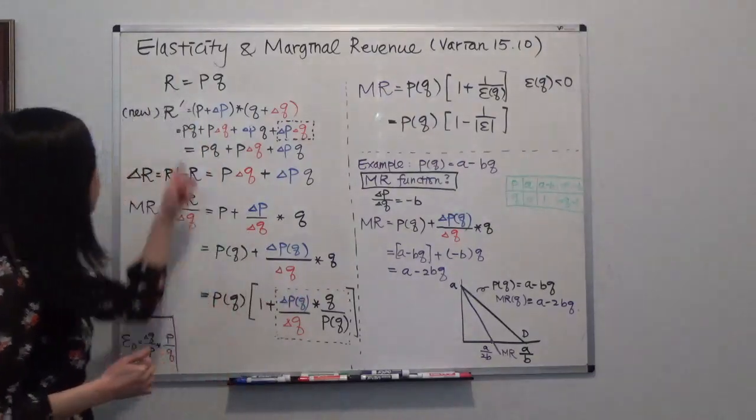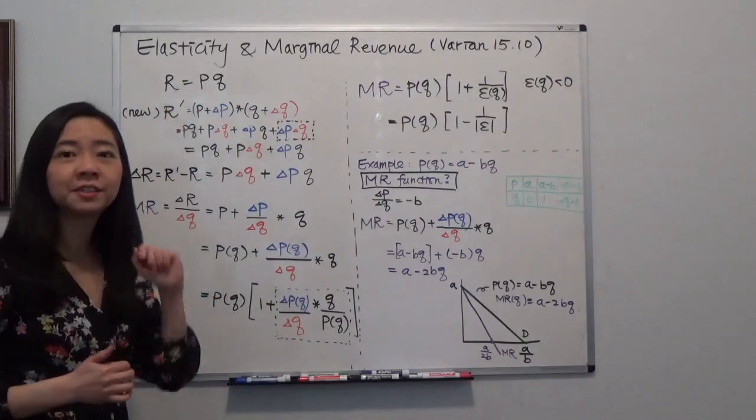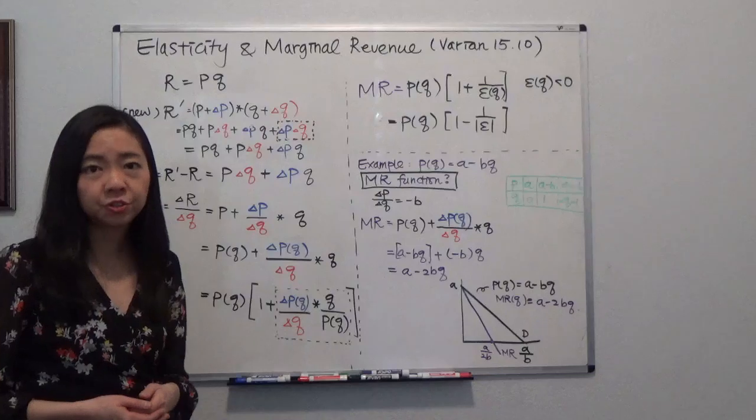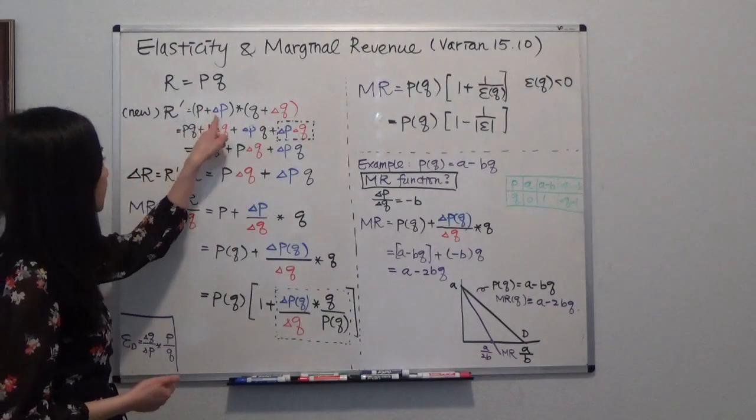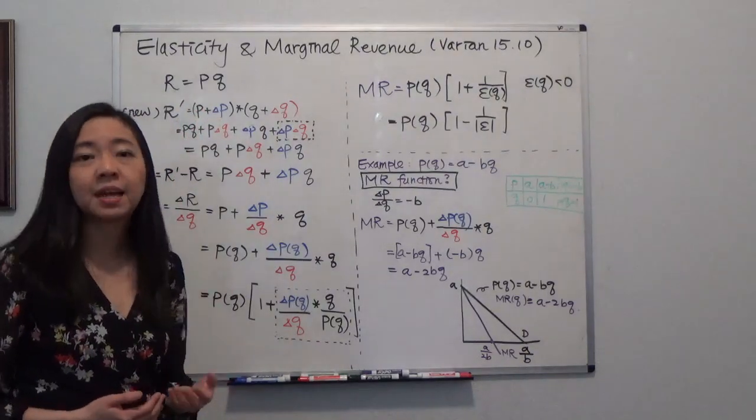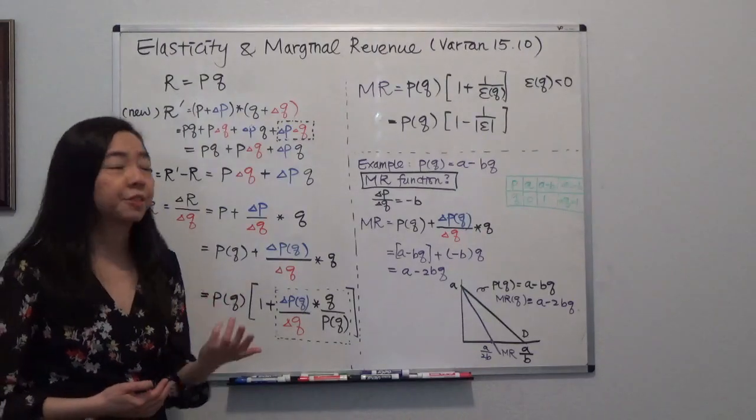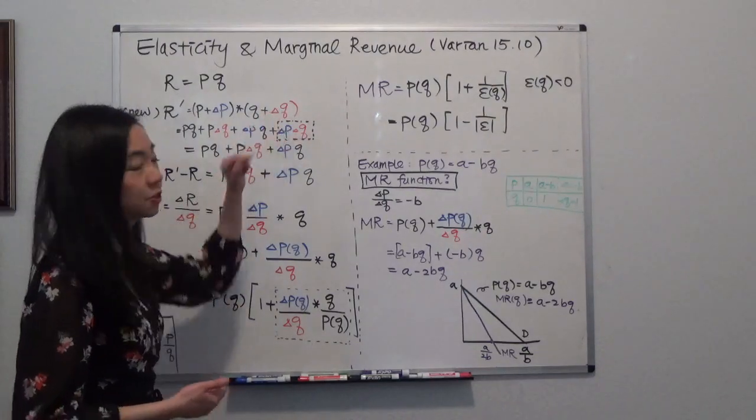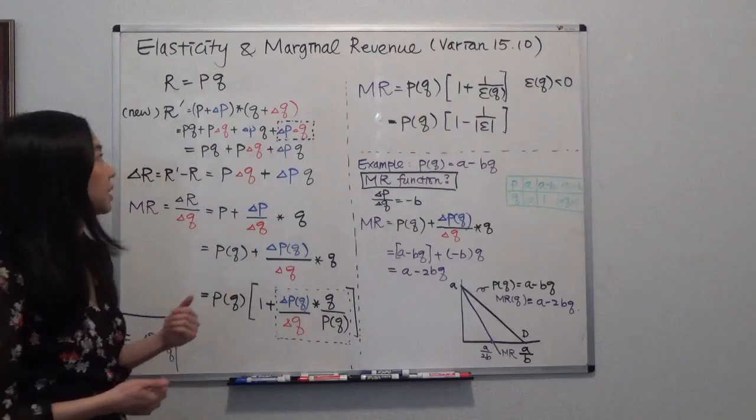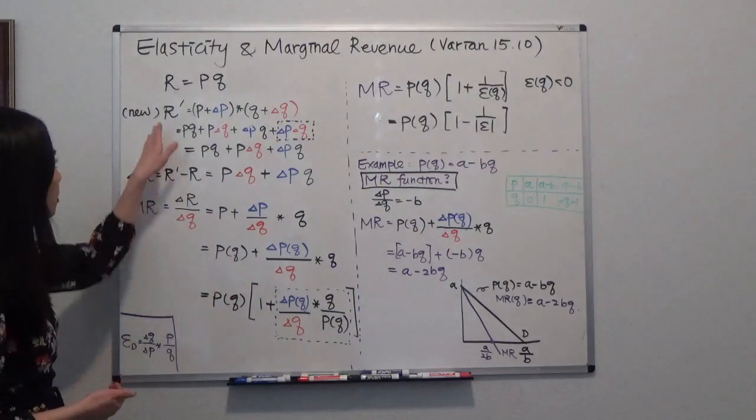So we know the revenue is price times quantity, and now I'm going to change the price from P to P plus delta P. And we know that because I'm a monopoly, and therefore the corresponding quantity is going to go down.